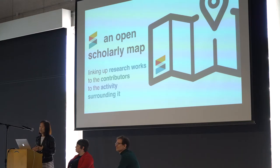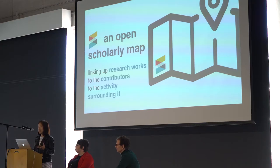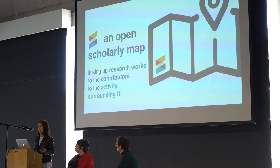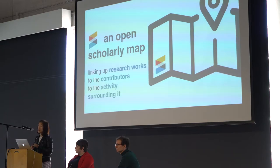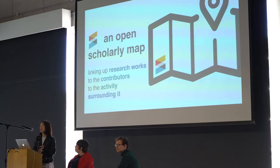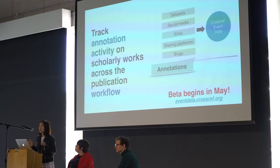And by linking all of this up, we can create what is essentially a massive graph or map of research. At Crossref, because we're open scholarly infrastructure, we make all of this freely available through our APIs to the entire community. This map is able to link up the research works to the contributors — whether an author, editor, reviewer, or the author of the annotation or curator of the dataset — and also to the activity surrounding it. This is something we have been working on for two years to build.